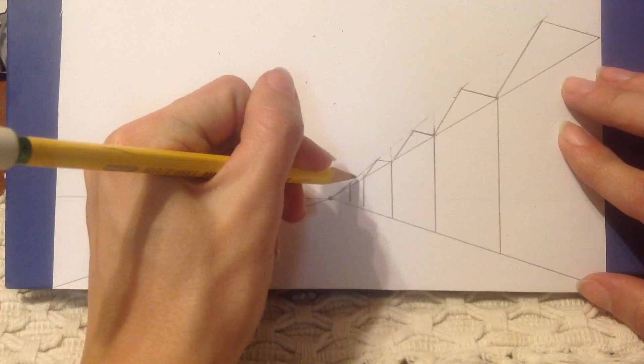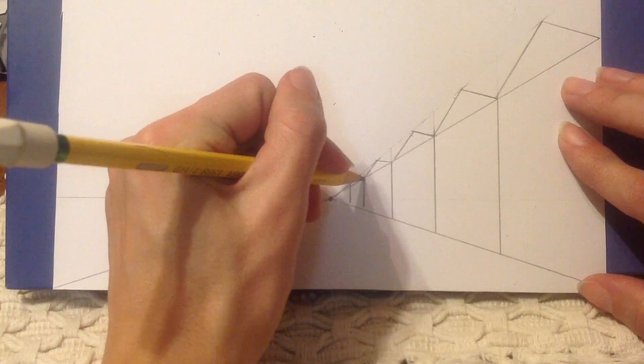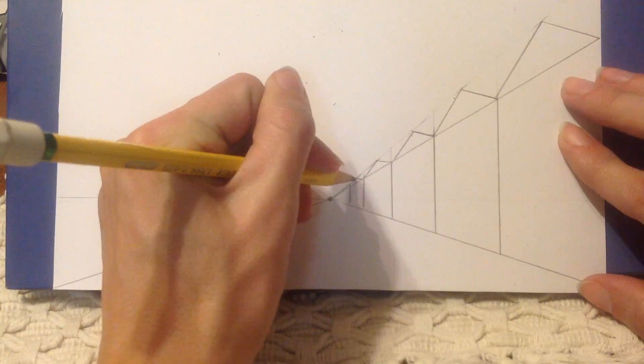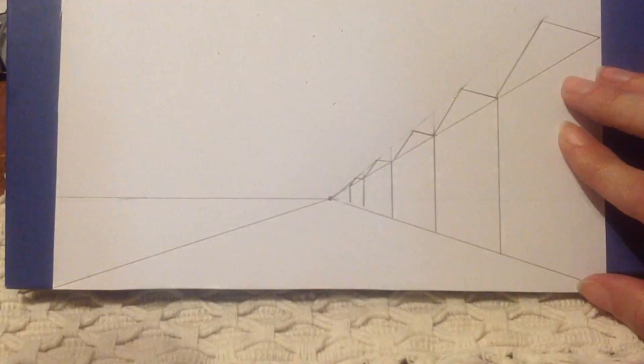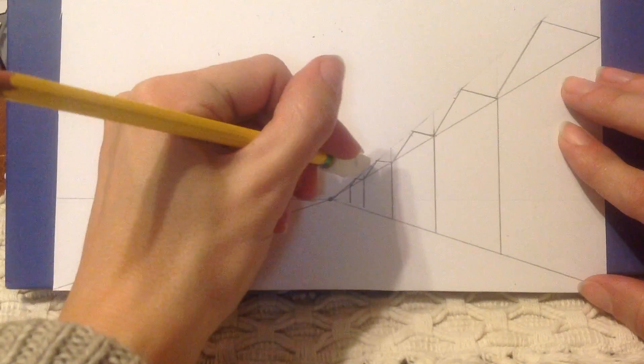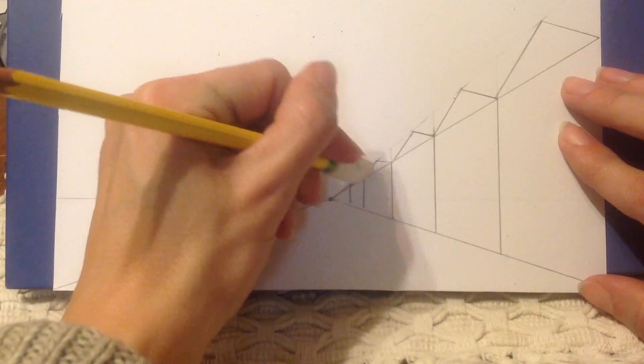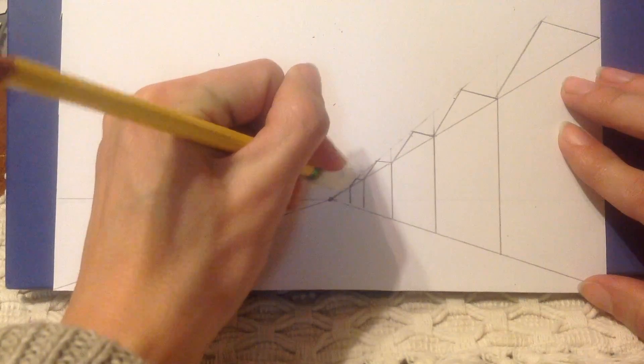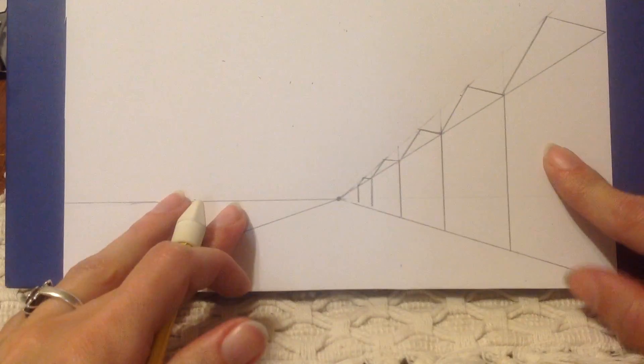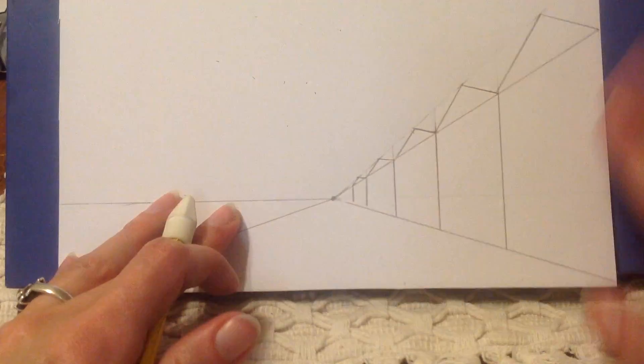This next one is really tiny, I'm going to hand draw it instead of using my ruler. I've got a little triangle and then erase that little extra part. So here it is, I've got my houses all in a row.